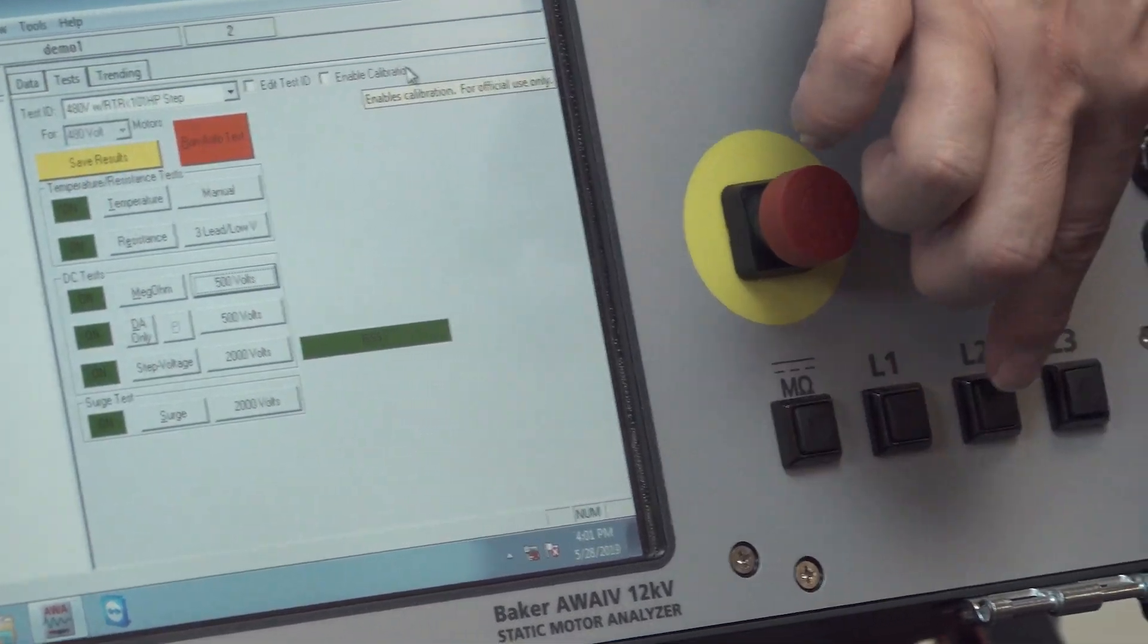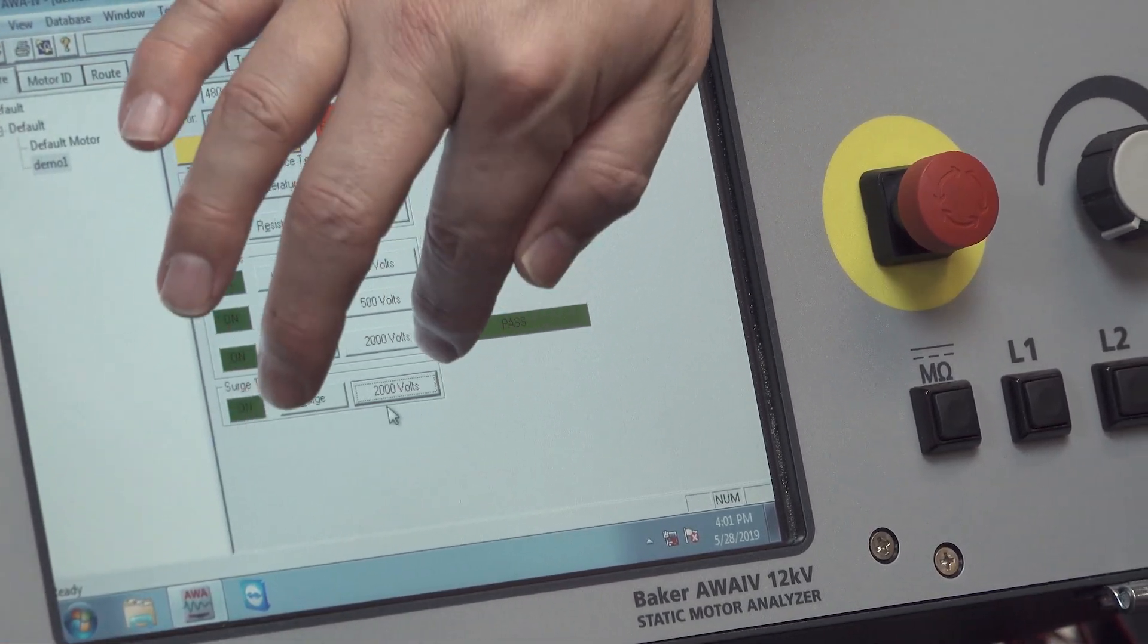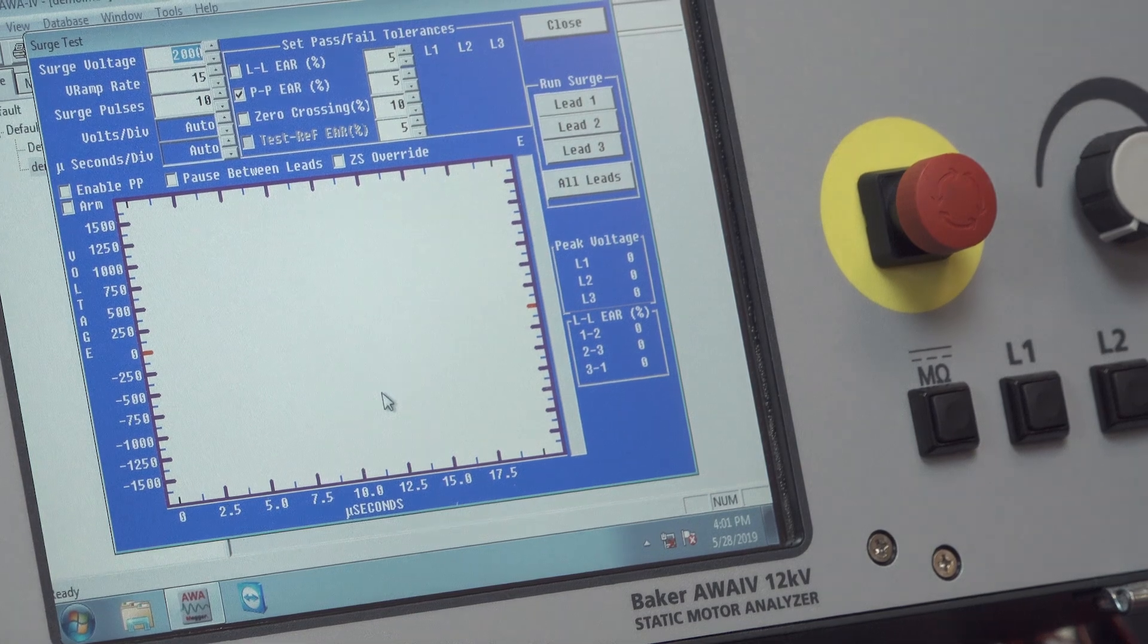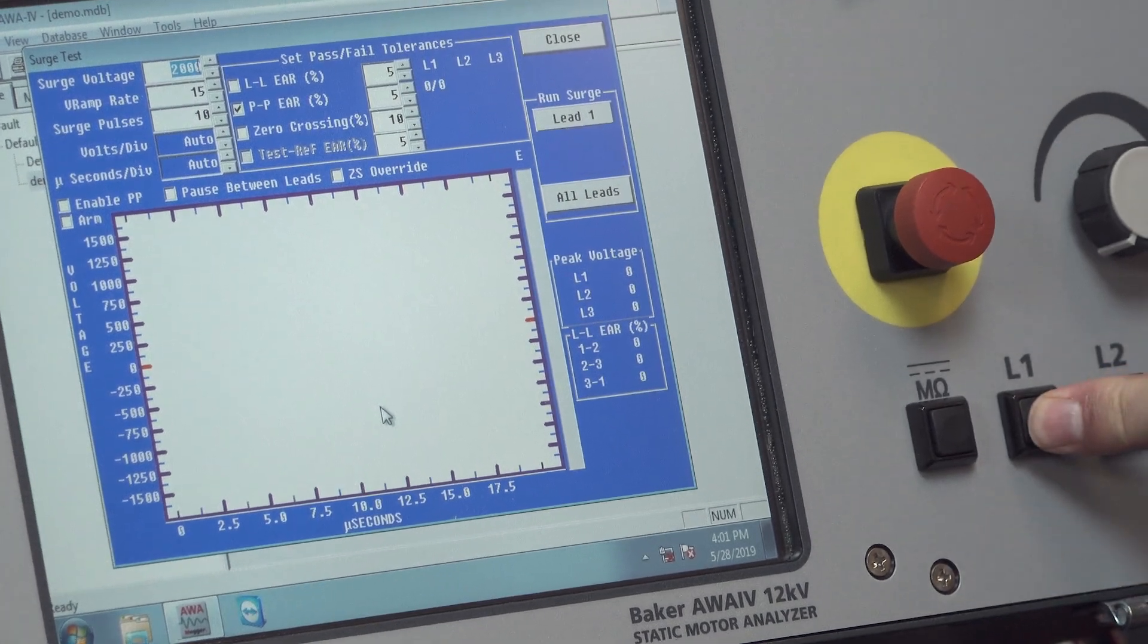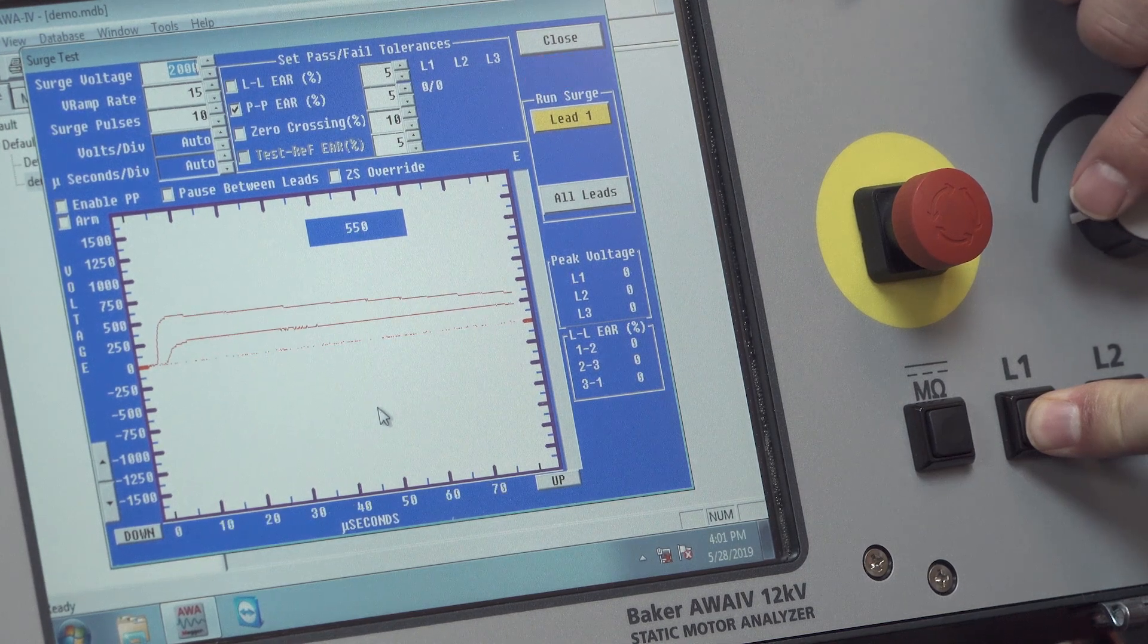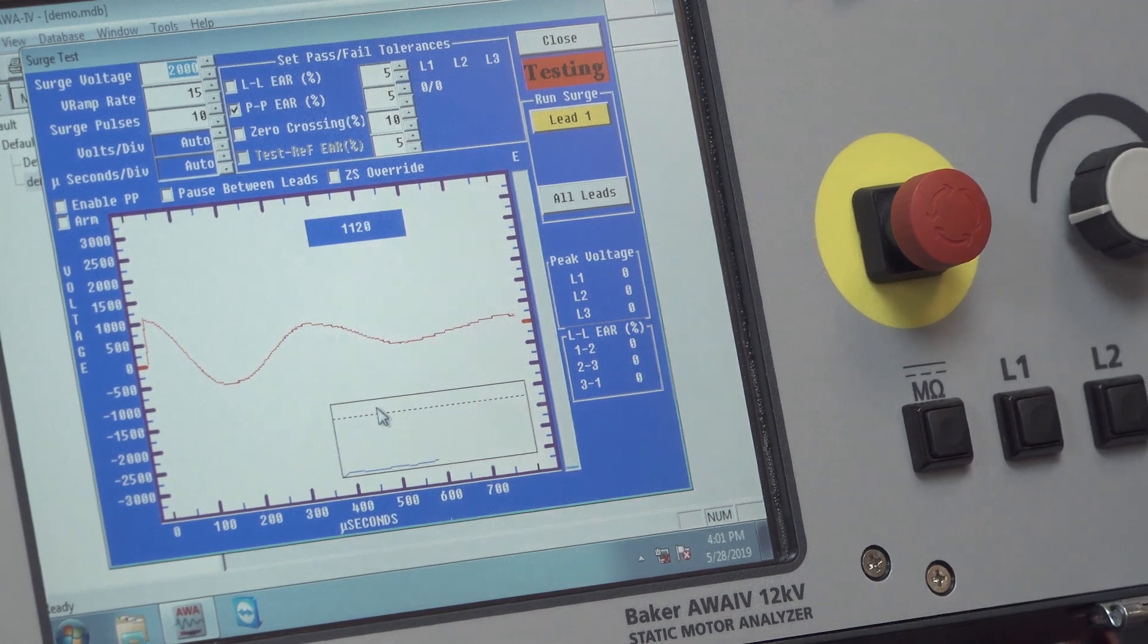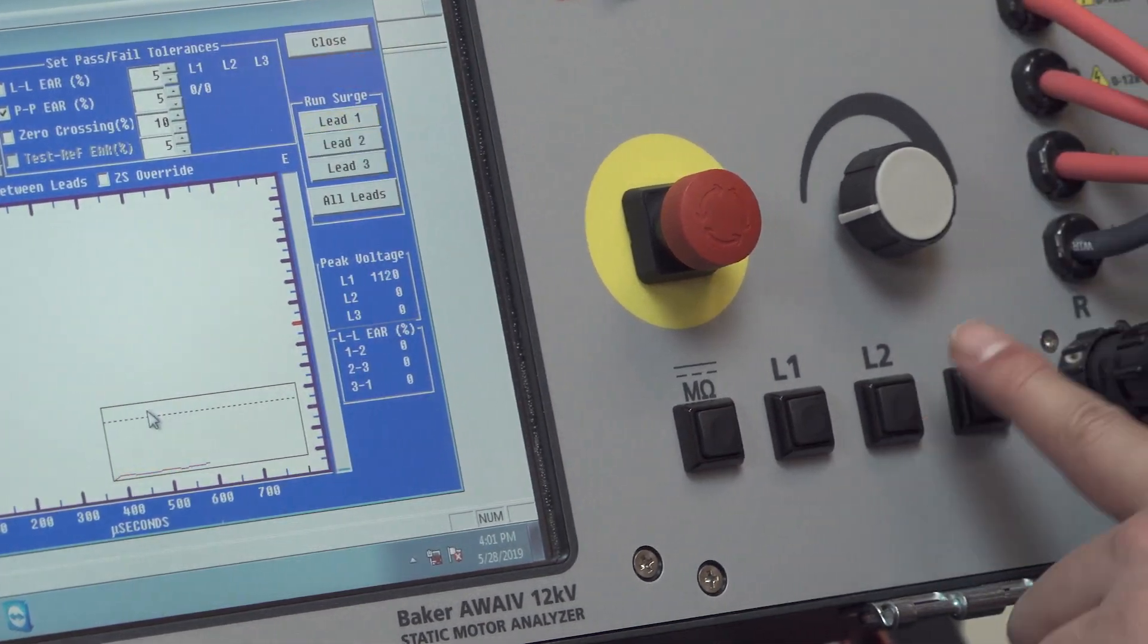The L1, L2, L3 are used similarly, but for surge testing in a manual mode. Pressing L1 will energize lead one, and then you would control the voltage with the potentiometer as you would for manual testing. Test to lead two, test to lead three.